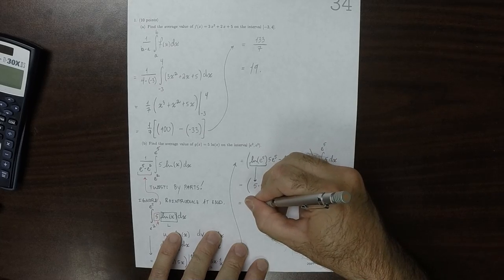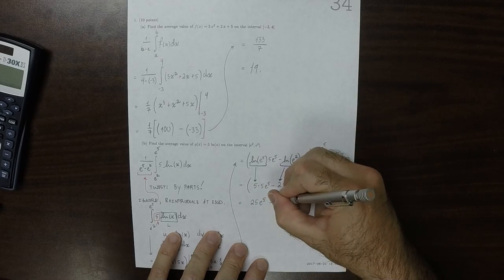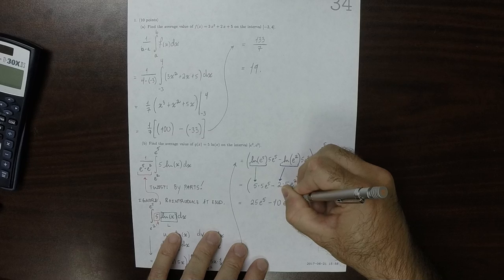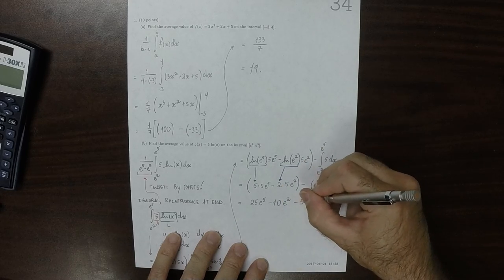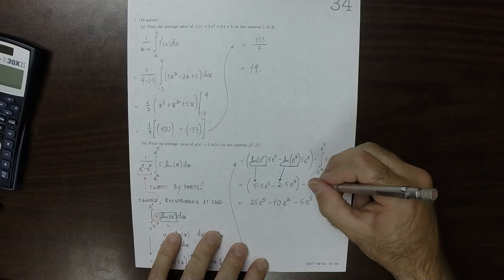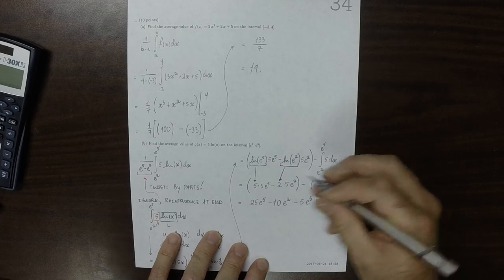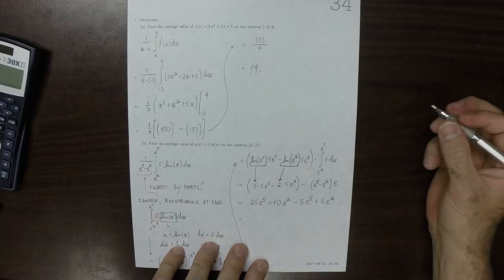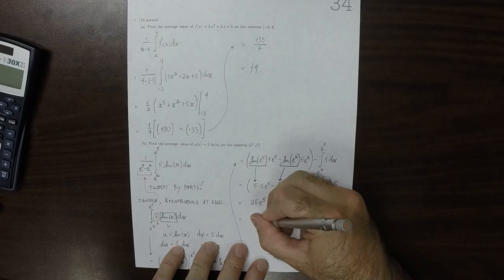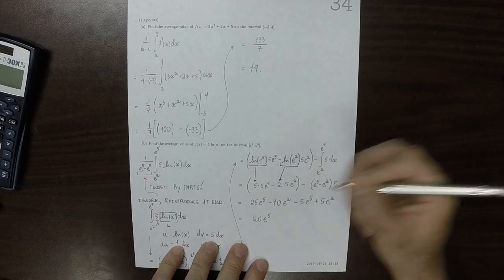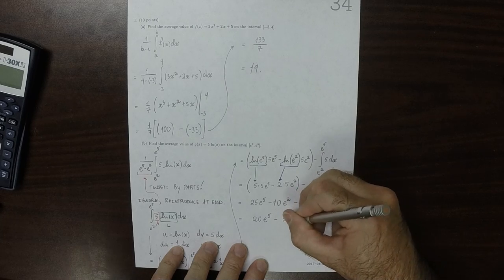25e to the 5 minus 10e to the 2, and then minus 5e to the 5, and then plus 5e to the 2. So there's 25 and then minus 5 of them, so that'd be 20e to the 5, and then minus 5e to the 2.